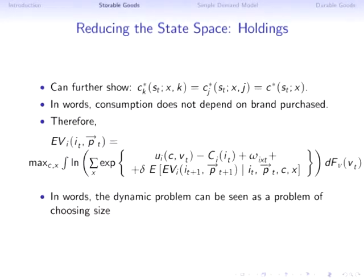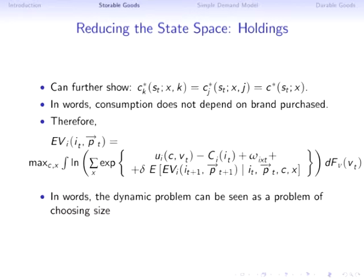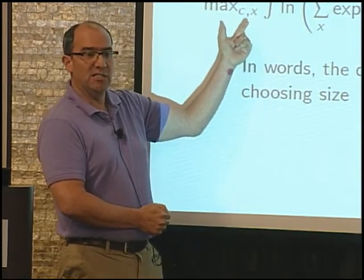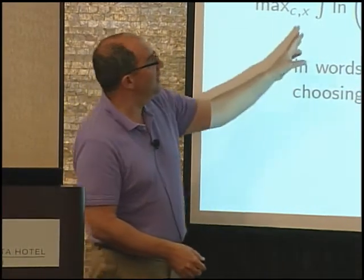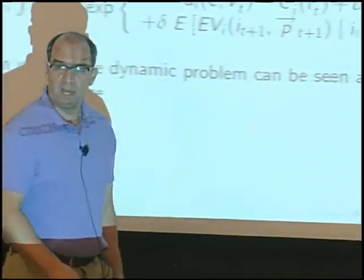We can simplify further: under the assumptions we've made, how much you consume is only a function of how much you've bought — your total inventory — not which brand. So now the EV function maximizes over consumption c and purchase choice x, not over brand-specific consumption. It's actually a slightly simpler problem, and the key object that will fit in here is the inclusive value.